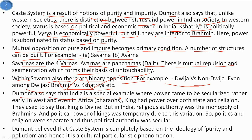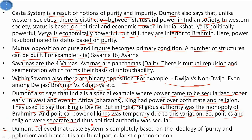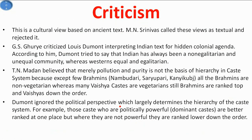Dumont also says that India is a special example where power came to be secularized — power does not play a major role in religious authority as it does in the West. Even in Africa, kings had power over both state and religion and were considered divine. But in India, religious authority was the monopoly of the Brahmins, and the political power of kings was temporary. Thus politics and religion were separable, and political authority was secular. Dumont believed the caste system is completely based on the ideology of purity and pollution — hence it is a cultural particularistic phenomenon.